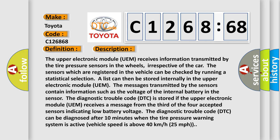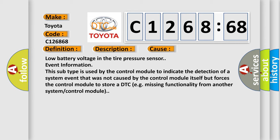The diagnostic trouble code (DTC) is stored if the upper electronic module (UEM) receives a message from the third of the four accepted sensors indicating low battery voltage. The DTC can be diagnosed after 10 minutes when the tire pressure warning system is active and vehicle speed is above 40 kilometers per hour (25 miles per hour).